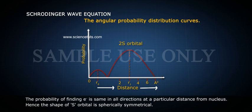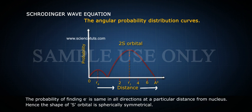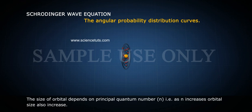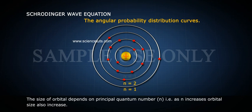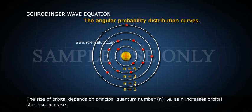The angular probability distribution curves show that the probability of finding the electron is the same in all directions at a particular distance from the nucleus. Hence, the shape of S orbital is spherically symmetrical. The size of the orbital depends on the principal quantum number n — as n increases, orbital size also increases.